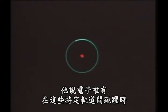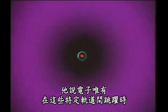Then, contrary to Maxwell, Bohr said the electron would radiate or absorb energy only when it jumped between these definite orbits.